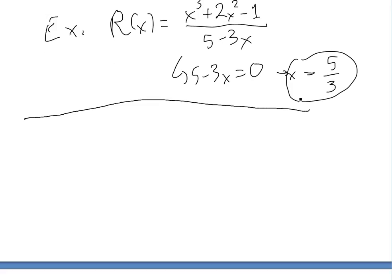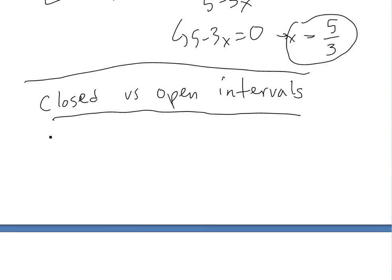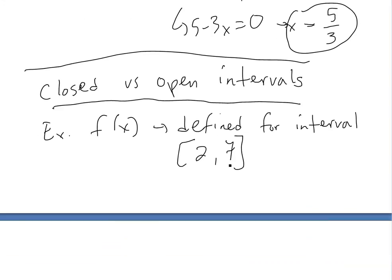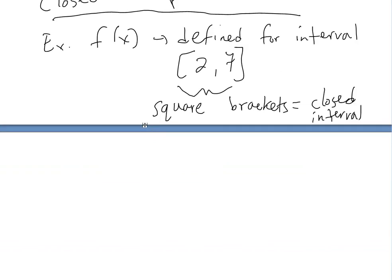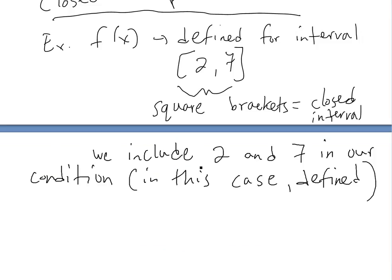Another thing to brush up on is closed and open intervals. For example, if f(x) is defined for the interval [2, 7] — these square brackets indicate a closed interval. A closed interval just means that f(x) is defined at 2 and 7 as well, so we include 2 and 7. In this case 2 and 7 are defined and we include them in our condition.